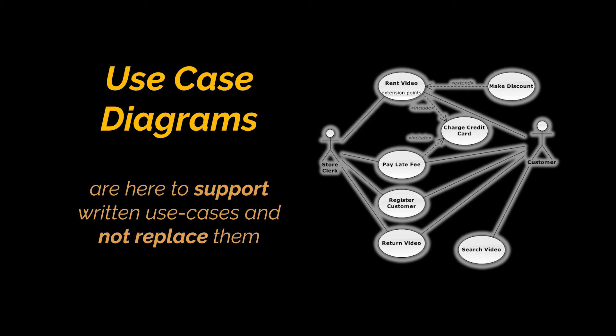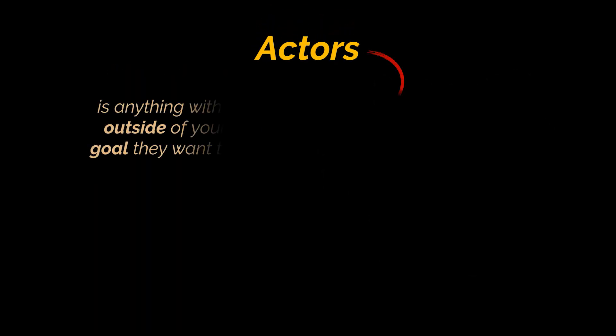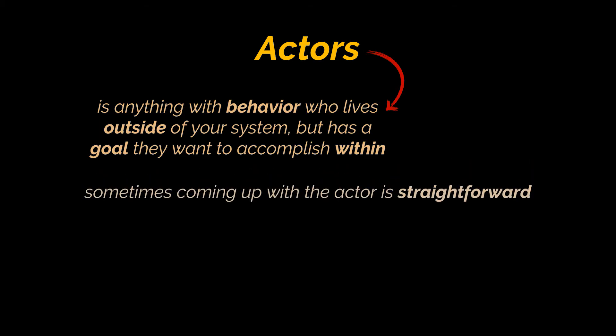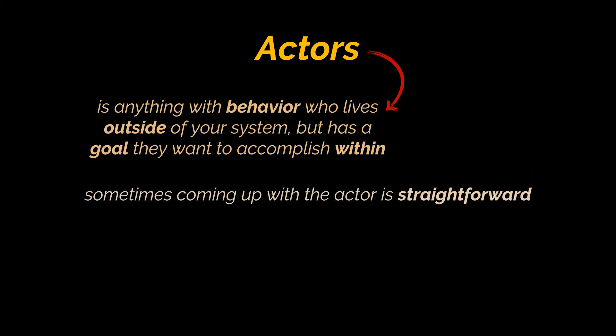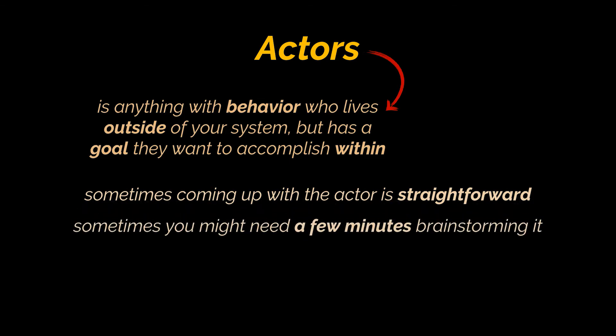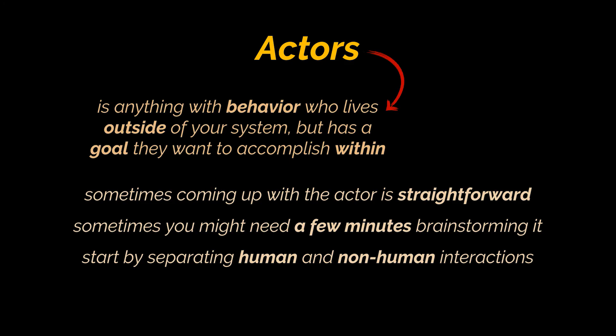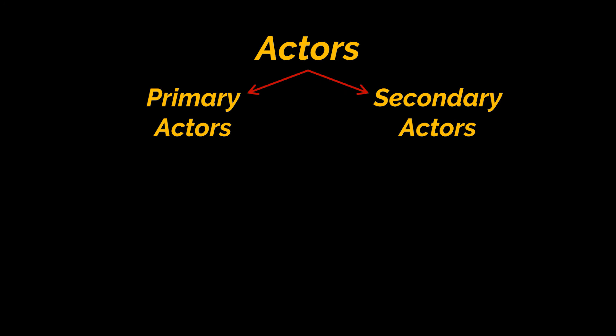An actor in a use case is anything with behavior that lives outside of our system but has a goal they want to accomplish within it. These are usually human beings, but not always. Sometimes identifying the actor is straightforward, like when building a simple one-person application. Other times you may need to brainstorm. A good starting point is to separate human and non-human interactions between your app and the outside world, since use cases often involve multiple actors.